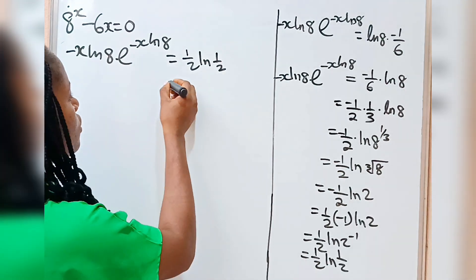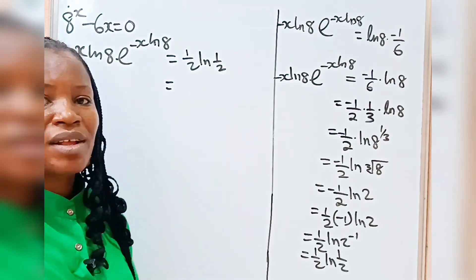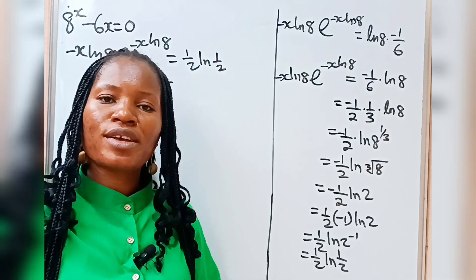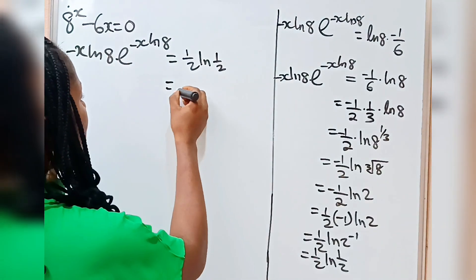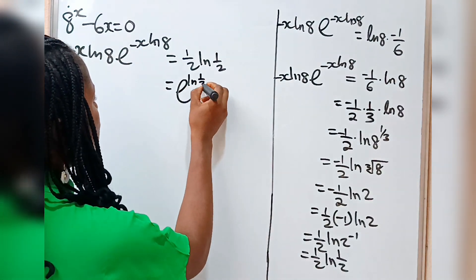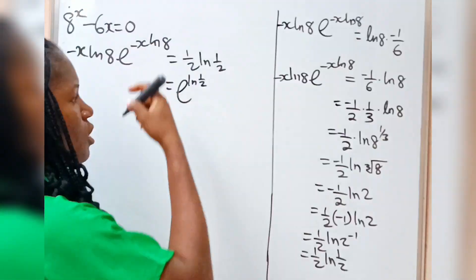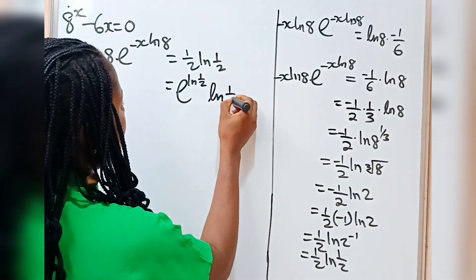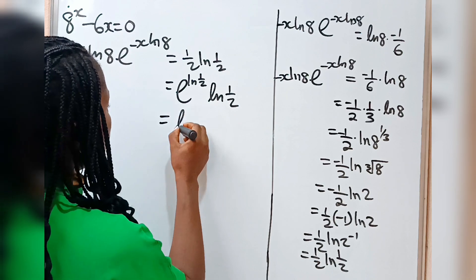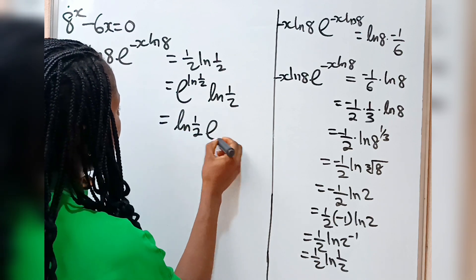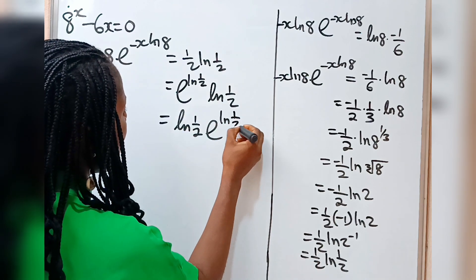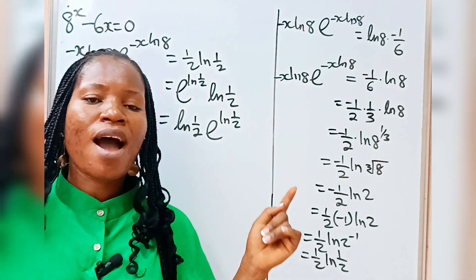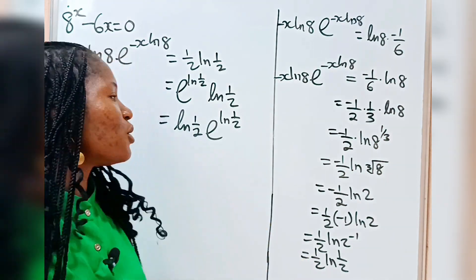Now we are going to introduce e here. Remember that for the Lambert W function to work, you need e. So I am going to introduce e. Remember that e to the power of ln(1/2) is also equal to 1/2. So we have ln(1/2) times e to the power of ln(1/2). So we have the same thing here and here, and this is the proper time to introduce our Lambert W function.